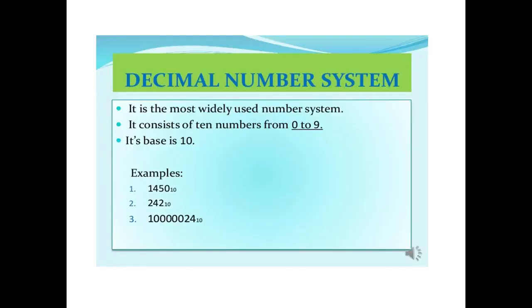So, first is decimal number system. A number which is used in our daily life, that is decimal number system. We can say that we have 10 digits, from 0 to 9. And when you will total 0 to 9, it will be 10. Here you can see in your screen, it is the most widely used number system which is used by human beings. It consists of 10 numbers from 0 to 9, and its base is 10. Because the total will be 10, the base will be 10.